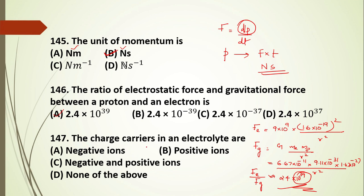Question 147: the charge carriers in an electrolyte. When HCl is dissolved in water, it dissociates into H⁺ and Cl⁻ ions. Both positive and negative ions are responsible for carrying charge in an electrolyte. The answer to question 147 is C.